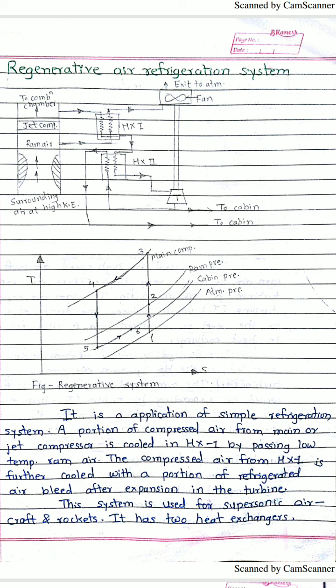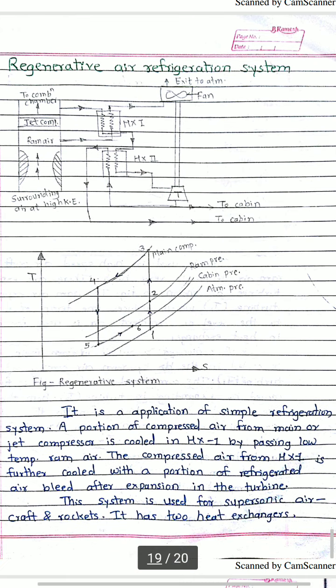At point four, the air exits heat exchanger two and enters the turbine. From four to five, expansion takes place — pressure falls to cabin pressure and temperature decreases. The low-pressure, low-temperature air enters the aircraft cabin, where it absorbs heat from the cabin, and its temperature rises, shown by the line five to six. This completes the T-S diagram for the regenerative aircraft refrigeration system.